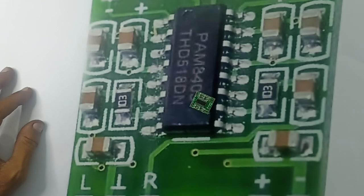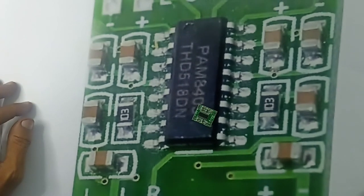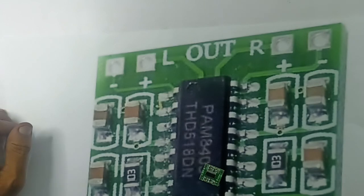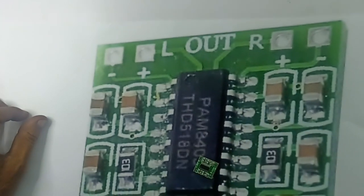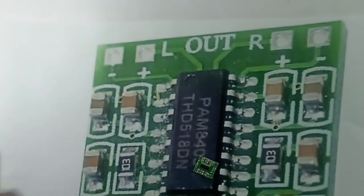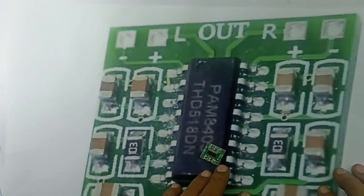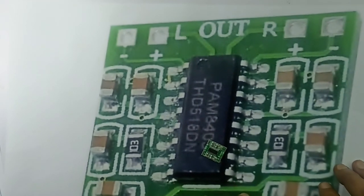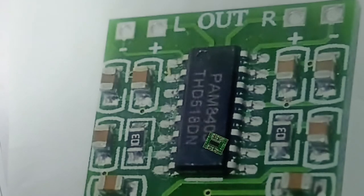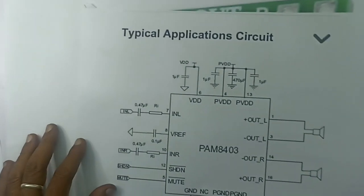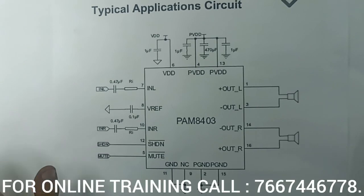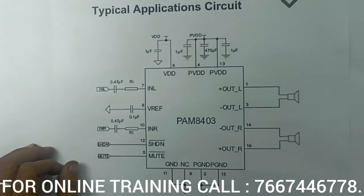The power supply can be any 5-volt source, such as a pen drive power supply or a DC source. There are line-out left and right outputs with two speakers. We have a 3-inch speaker project. Let's do a practical demo. This IC is the schematic diagram — pin 1 is the first pin.